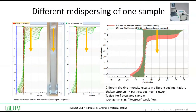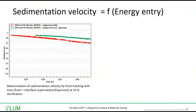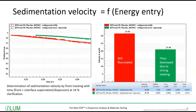In the different sedimentation results, shaking stronger means the particle sediments slower, which is typical for a flocculated sample because stronger shaking destroys the weak flocs. Once we quantify it, sedimentation velocity was determined using the software module front tracking — following the change of position of the interface between the supernatant and the dispersion at 14% clarification. The red sample, redispersed softly, gave a sedimentation velocity of 31.5 mm per hour. The green sample gave 21 mm per hour — less than red — because the flocs were destroyed, resulting in smaller particles. Per Stokes' law, smaller particles have a slower sedimentation velocity.